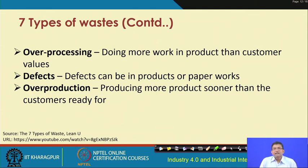The sixth waste is defects — in the product, service, process, or paperwork — and all defects should be reduced. The seventh is over-production — producing more product sooner than the customer requires — and that too should be reduced. These are the seven different forms of waste in lean.